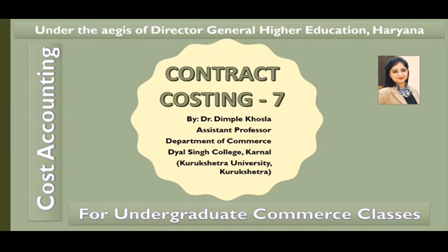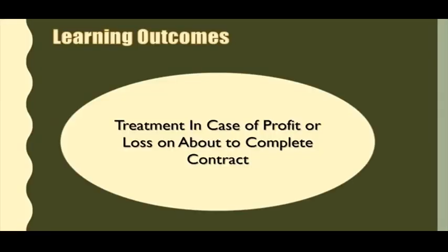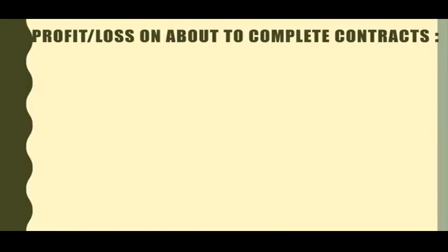We are doing the chapter of Contract Costing. Today we will discuss the last topic of this chapter, that is treatment in case of profit or loss on about-to-complete contracts. Yani ki jab contract bilkul complete hone wala hota hai, to tab usme jo profit aata hai, usko kis tarike se treat kiya jata hai.